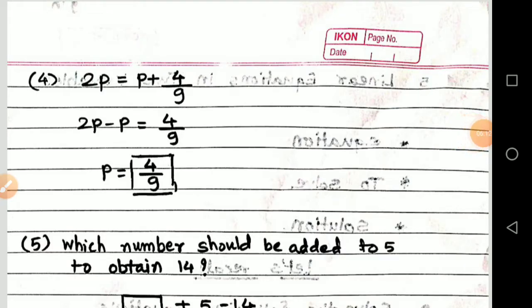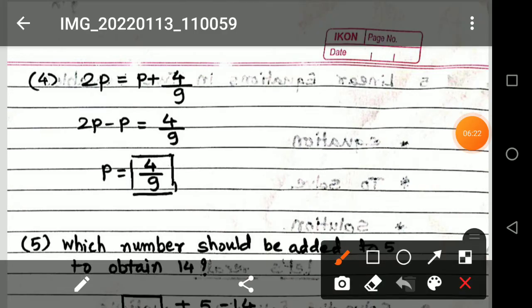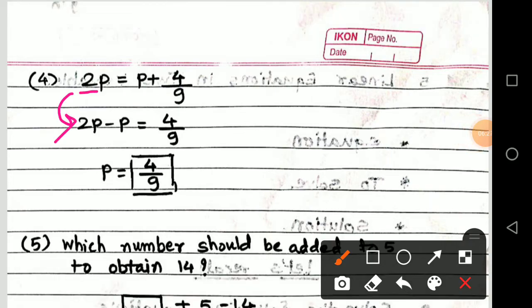Next example: 2p is equal to p plus 4 upon 9. First collect variable terms to the left. 2p is already on the left; transpose the p from the right — it becomes negative on the left. So 2p minus p equals 4 upon 9, which gives p equals 4 upon 9. That is the answer and the solution.